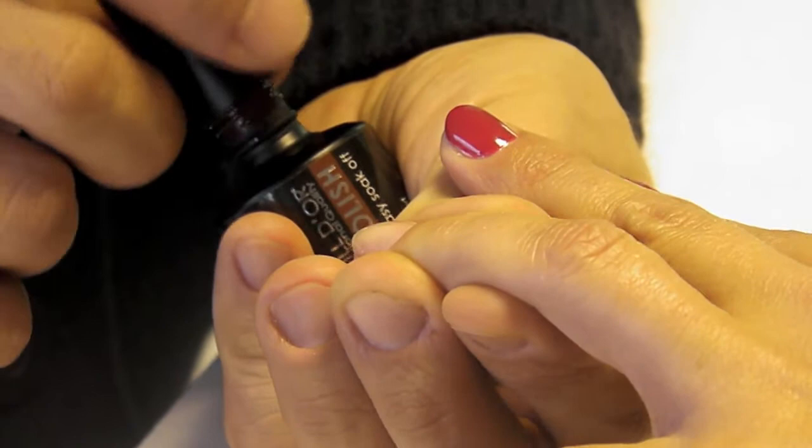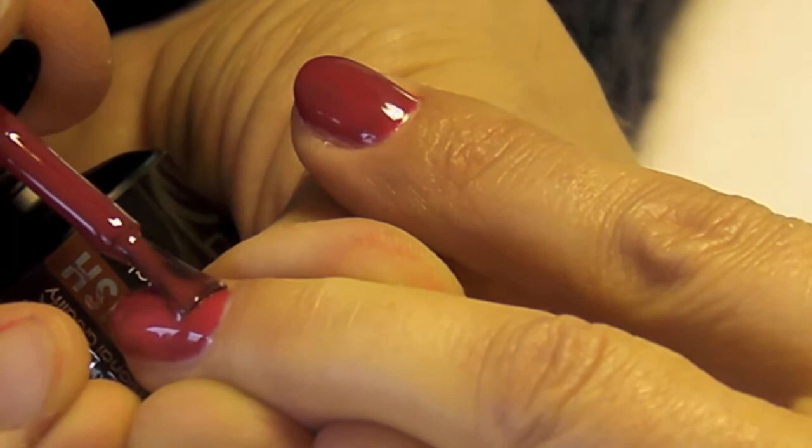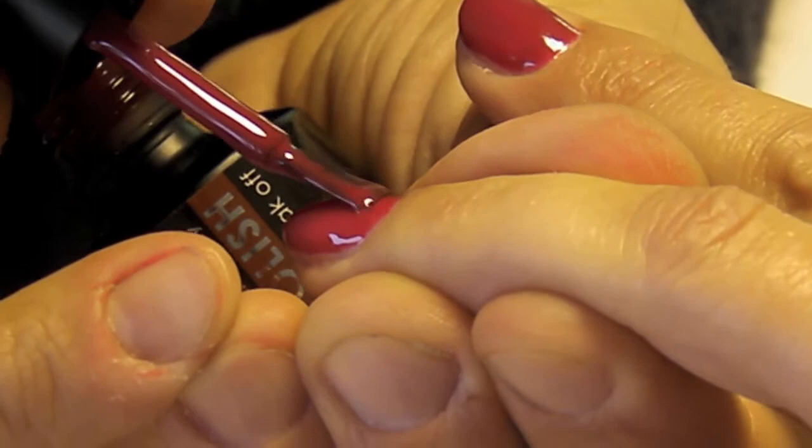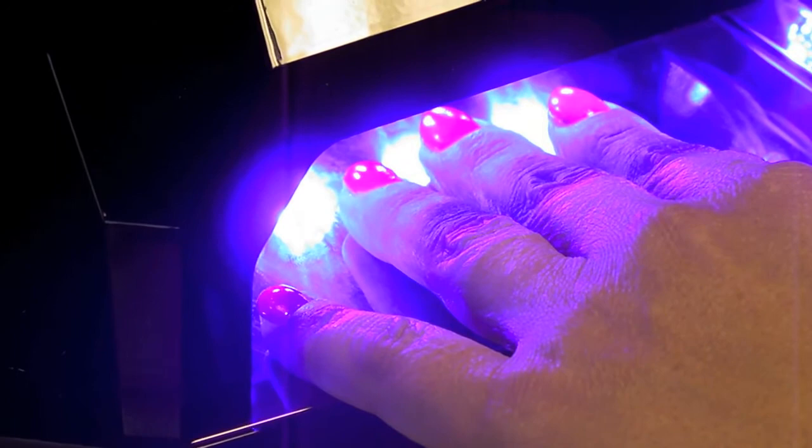Apply a thin layer of gel polish color. Cure 30 seconds in LED light, or 2 minutes in UV lamp.